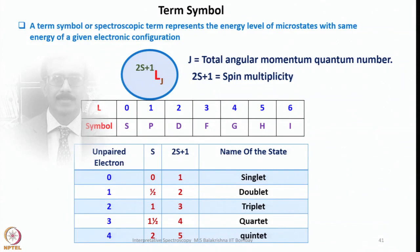Term symbol is very important in electronic spectroscopy. A term symbol or a spectroscopic term essentially represents the energy level of microstates. I would elaborate on what a microstate is and calculate microstates for different electronic configurations. With the same energy of a given electronic configuration — that means the ground state — you can also have several possible excited states, and each transition should be identified. That is the reason we can have different terms.